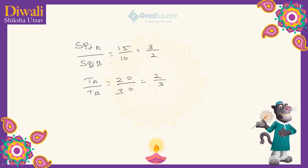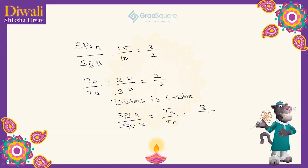So when distance is constant between two people, speed of A by speed of B is equal to time taken by B by time taken by A. So the ratio is nothing but 3 by 2.